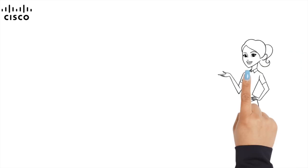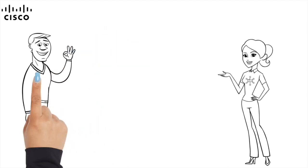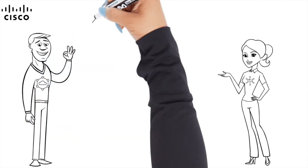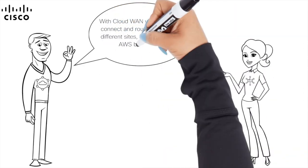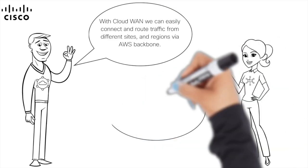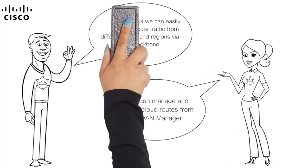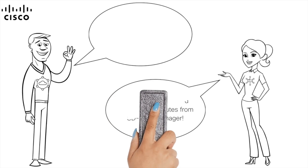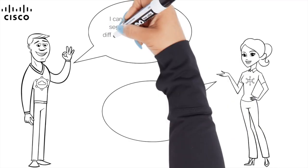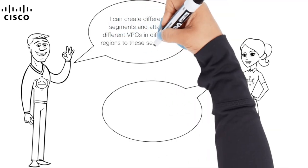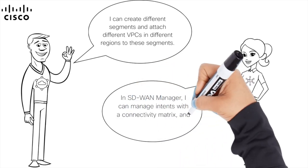Let's get Anna and Steve one more time in the same room to repeat all the information about Cloud1 and its integration with Catalyst SD1. With Cloud1, we can easily connect and route traffic from different sites and regions via AWS's backbone. I can manage and monitor cloud routes from SD1 Manager. I can create different segments and attach different VPCs in different regions to these segments. In SD1 Manager, I can manage instance connectivity and audit them periodically.